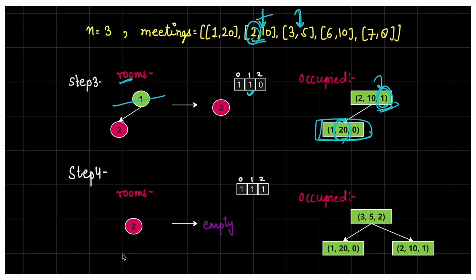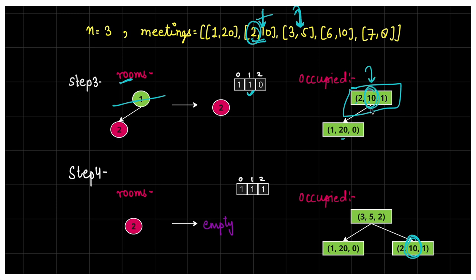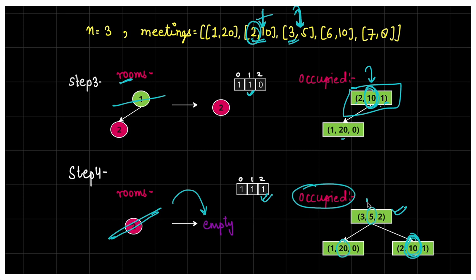Meeting 3,5 arrives. We check occupied queue top — the smallest end time meeting ends at 10, which is greater than 3, so no room is free yet. We take room 2 from available heap, schedule 3,5 in room 2, increment room 2's count. Now all three rooms are occupied. The occupied queue is sorted by end time — minimum end time is at the top.